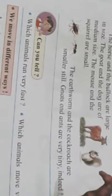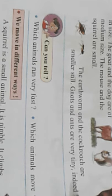This is the difference between the size of different animals and birds. Which animals run very fast? Which animals move very slowly? Animals that run fast include cheetah and tiger. Animals that move very slowly include tortoise and snail.